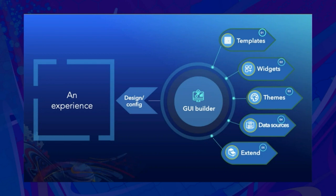You can configure an experience by assembling these building blocks together: template, widget, theme, data source, and the framework library for extensibility. We're going to focus on the first four blocks in this presentation. Please check out the Customizing and Extending session for extensibility.